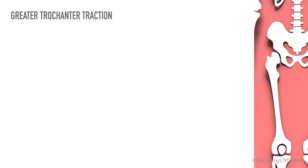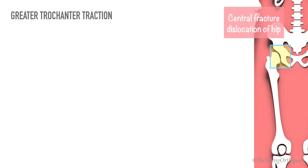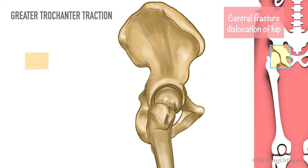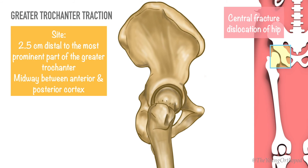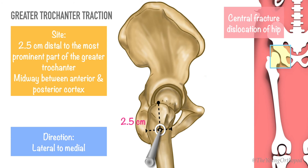Indications for greater trochanter traction include central fracture dislocation of the hip. The pin entry site is marked on the lateral surface of the femur, 2.5 centimeters below the most prominent part of the greater trochanter, midway between the anterior and posterior surfaces. A coarse threaded cancellous screw or screw eye is applied in a lateral to medial direction.